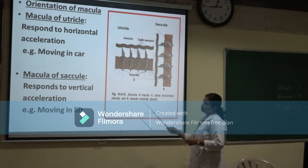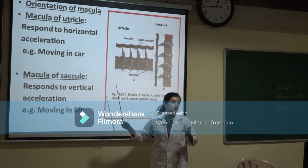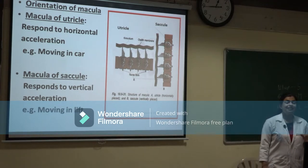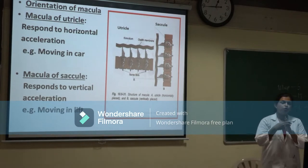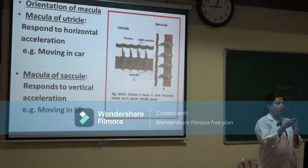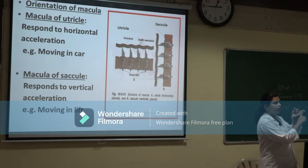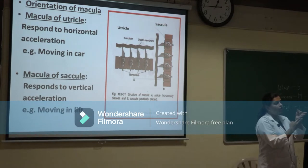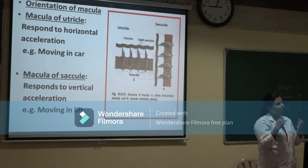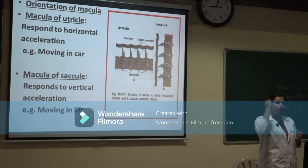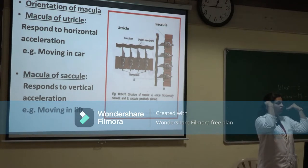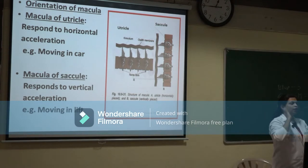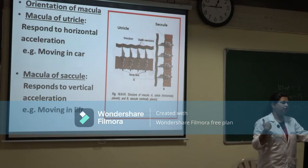The macula of the saccule has horizontal cilia and a vertical neuroepithelium. When you are in a lift going upwards, the upward acceleration pulls the cupola downward, moving the cilia toward the kinocilium and stimulating the saccule. So whenever there is vertical acceleration, the saccule is stimulated; whenever there is horizontal acceleration, the utricle is stimulated.